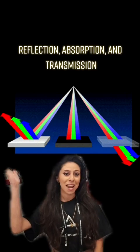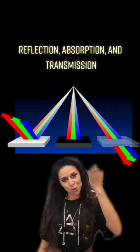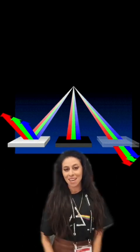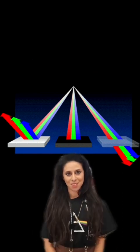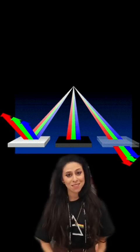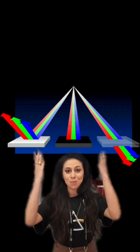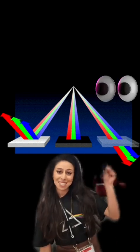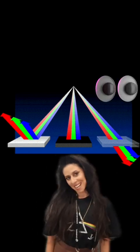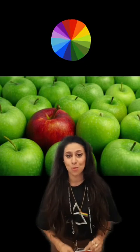Next we'll group reflection, absorption, and transmission. If all light is reflected, the object is a mirror. If all light is absorbed, the object is black. And if all light is transmitted, it's clear. If only some colors are absorbed or reflected, the object has a color.